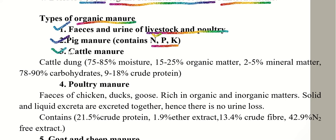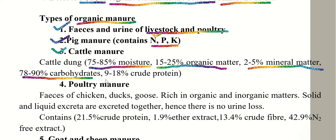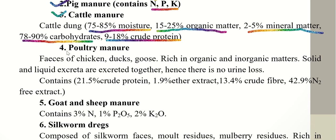Cattle manure — cattle dung and urine — also contains nitrogen, more than pig urine, in the form of hippuric acid. Cattle dung has 70 to 85% moisture, 15 to 25% organic matter, 2 to 5% mineral matter, 78 to 90% carbohydrates, and 9 to 18% crude protein. Cattle manure is very important and useful for application in the pond.